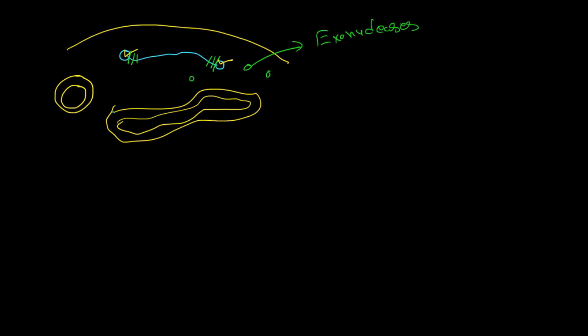Another reason for incorporation is that to produce proteins, the extracellular DNA needs a promoter region. The extracellular DNA might not always have a promoter region, but the bacterial chromosomal DNA does. So if the extracellular DNA gets incorporated within the bacterial chromosome, it can use the bacterial promoter region. This is another reason why the extracellular DNA needs to be incorporated within the chromosome.